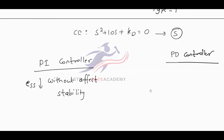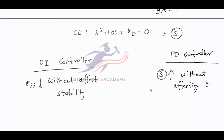And what about PD controller? PD controller makes the system stable without affecting steady state error. It is used to improve stability — stability will be improved without affecting ESS. These are the advantages of PI controller and PD controller.